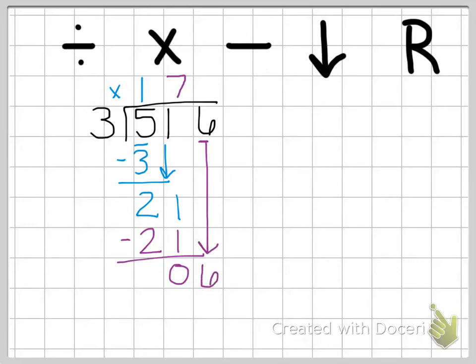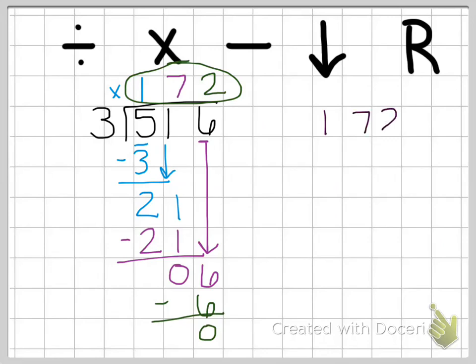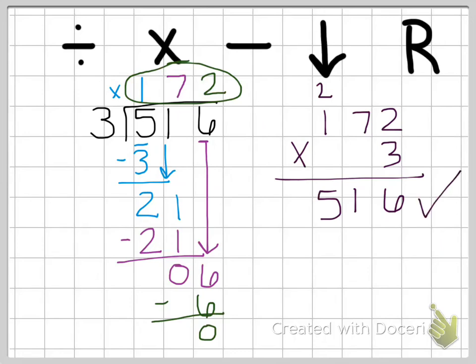Now we repeat our steps. We do six divided by three — three goes into six two times. Three times two is six. We subtract and get zero. We're done because we don't have anything left to bring down and we have zero left over, so there's no remainder. The answer is 172. We check it by multiplying 172 times three. Two times three is six. Seven times three is 21. One times three is three plus two is five, which is what we started with.